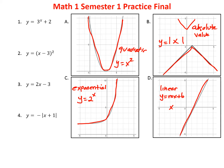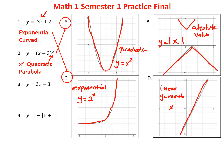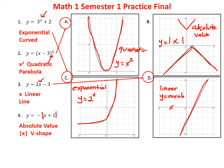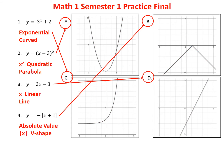Given that, we can match our equations. Number one has an x in the exponent — that's our exponential function, answer C. Number two has a square term — that's our quadratic parabola, answer A. Number three, x is all by itself without any x squared or cube root — that's our linear function, answer D. And finally, we see the brackets for absolute value — that's number four, answer B.